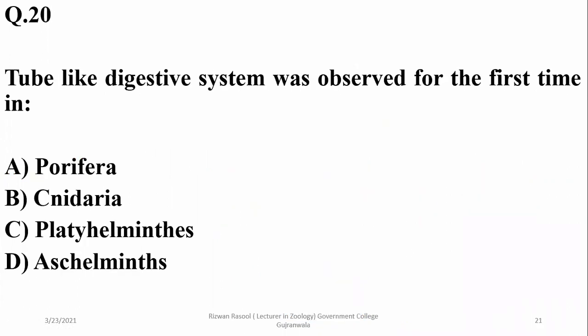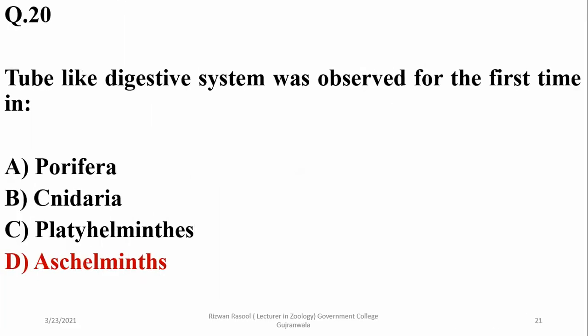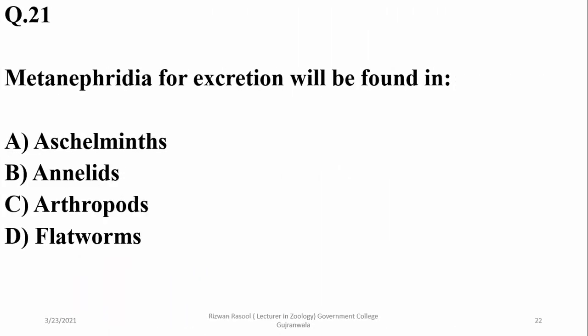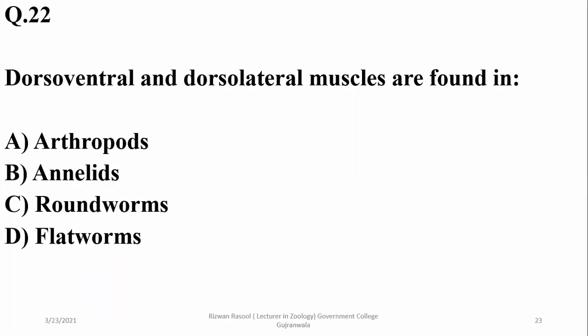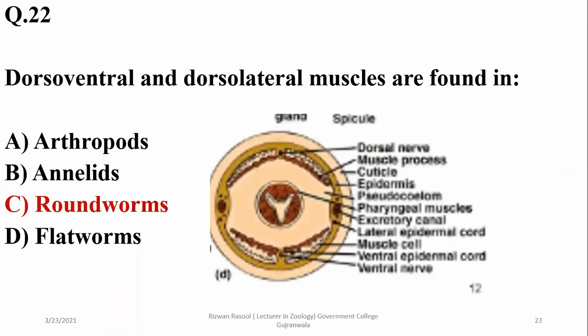Question sixteen: a tube-like digestive system was observed for the first time in aschelminthes or roundworms. In primitive groups — sponges, cnidarians, and platyhelminthes — there was either no digestive system or a sac-type digestive system. Metanephridia for excretion are found in annelids. Dorsoventral and dorsolateral muscles are found in roundworms or aschelminthes.